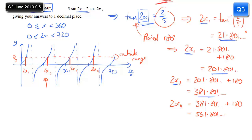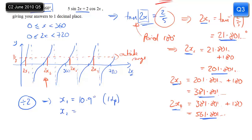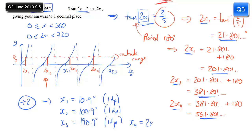The last step is to divide all of these values by 2 to get individual values for x. x1 is 21.8 divided by 2, which rounds to 10.9 degrees. x2 is 201.801 divided by 2, giving 100.9 degrees. x3 is 381.801 divided by 2, giving 190.9 degrees. And x4 comes from dividing 561.8 by 2, giving 280.9 degrees to one decimal place. And there we have four solutions - we've solved it.